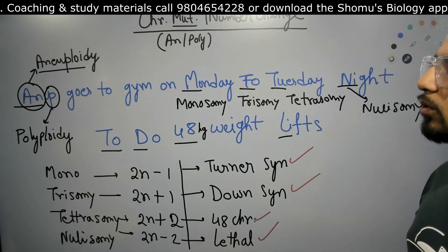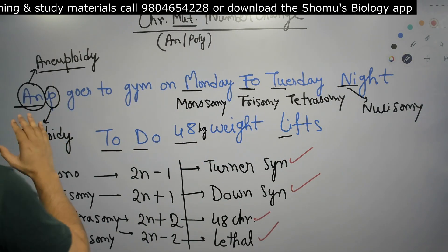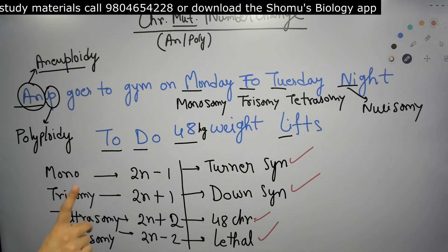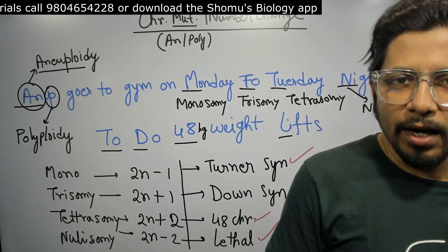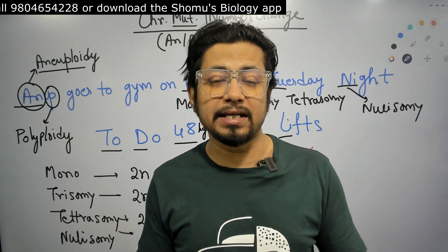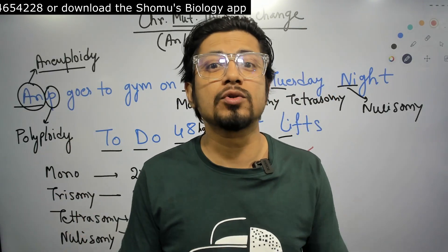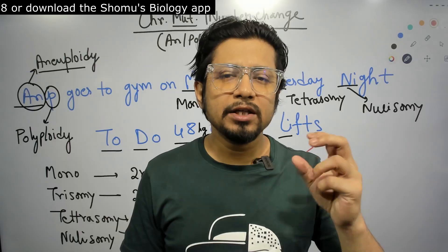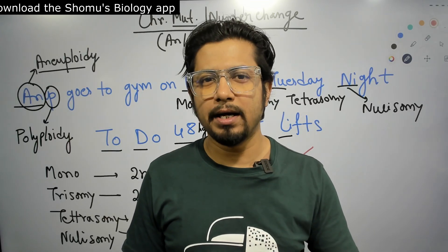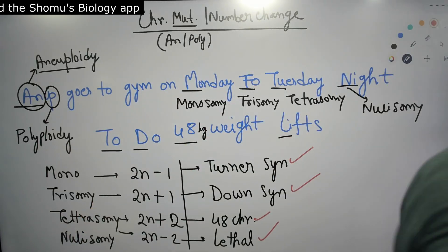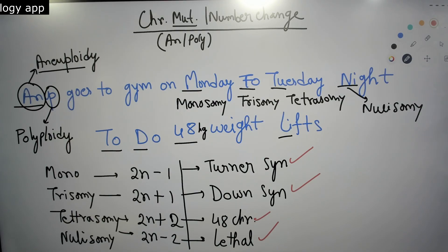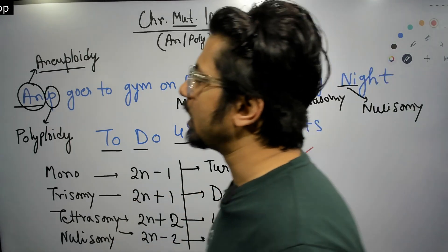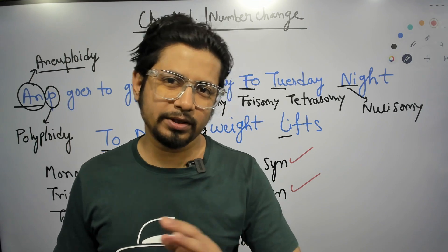So from one single and simple sentence — 'Anup goes to gym on Monday to Tuesday night to do 48 kg weight lifts' — we get to know about all four types of aneuploidies and the diseases associated with them.